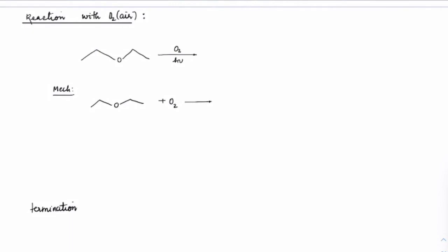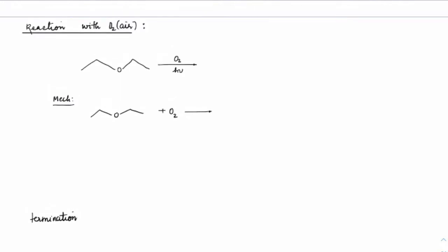Let us get to the reactions of ethers. Other than just hydrolysis, what are the reactions which you can see? First reaction is ethers with oxygen, which means in air. So in air if we react ethers, we usually see a compound forming — we will get O-O-H. This is known as hydroperoxide. We usually see hydroperoxides forming.